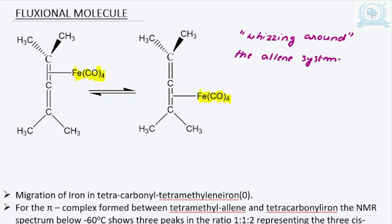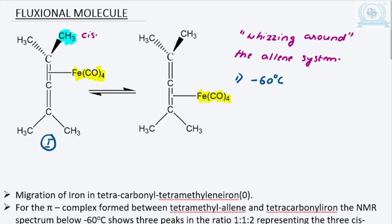When the temperature is extremely low — minus 60 degrees Celsius — the non-equivalent protons give distinct peaks. There are three non-equivalent protons. Proton H-a is cis to the tetracarbonyl iron group of atoms, and there is also a trans proton H-b.